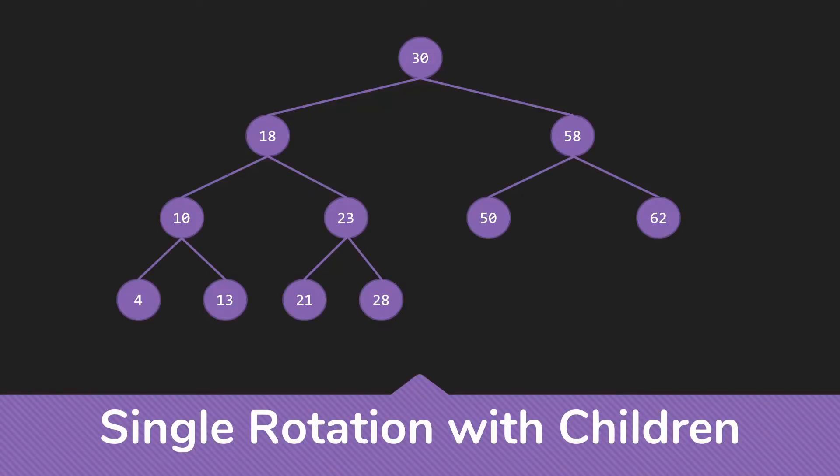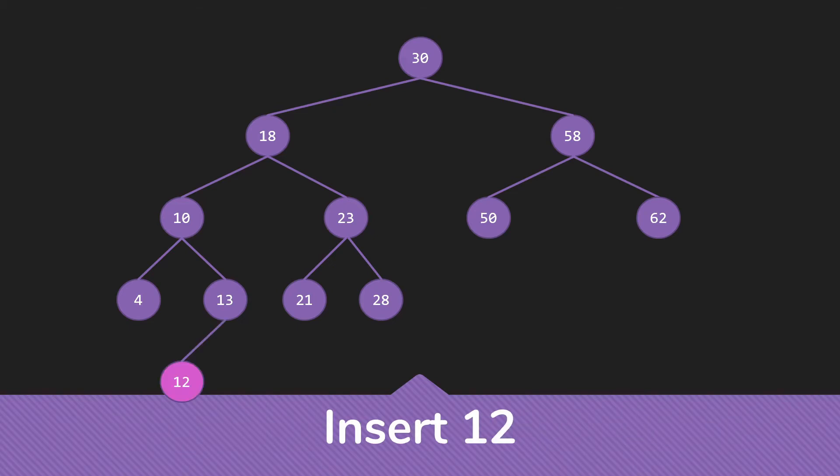First, we'll look at a single rotation with children. So we're going to add something so that we're going to have to rotate right up at the very top of the tree. So in this case, we'll insert the 12. After inserting, we need to check our balance factors. So the leaf, of course, is fine. Its parent is fine. The 10 is also fine. The 18 is fine. But the 30 is not fine.